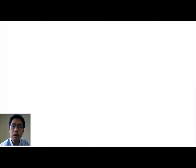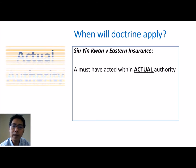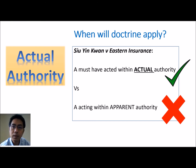For the doctrine of undisclosed principal to arise, there is one very important requirement, established in the Privy Council case of Su Yin Kwan: the agent must have been acting within his actual authority. This must be contrasted from where the agent may be acting within apparent authority — that will not be acceptable. The law requires the agent to be acting within actual authority. Only then will the undisclosed principal be bound, allowing the principal to sue on the contract and vice versa. If the agent acted outside authority, the undisclosed principal should not be bound.